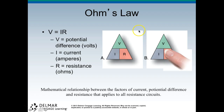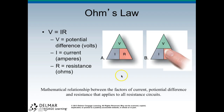Ohm's Law: V = IR, where V is the potential difference in volts, I is the current in amperes, and R is the resistance in ohms. This is the mathematical relationship between current, potential difference, and resistance that applies to all resistance circuits. To solve: cover the I and you get V over R; cover the R and you get V over I. You can draw this out on your test so you don't get it wrong.